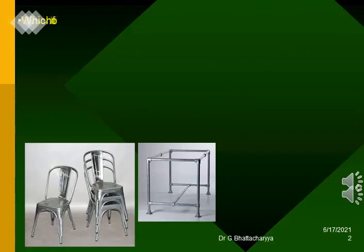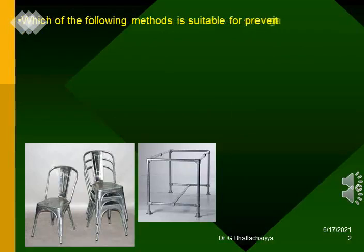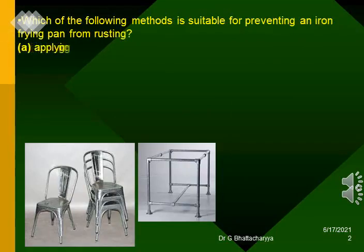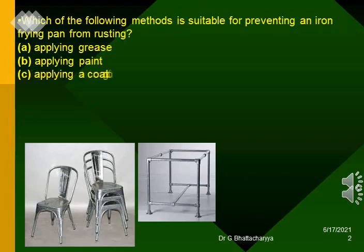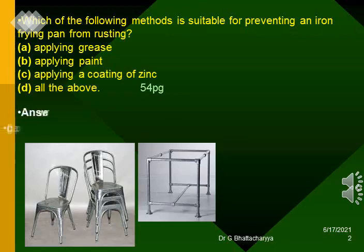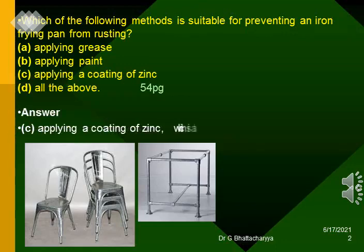Which of the following methods is suitable for preventing an iron frying pan from rusting? A. Applying grease. B. Applying paint. C. Applying a coating of zinc. D. All the above. Answer: C. Applying a coating of zinc, which is also called galvanizing.